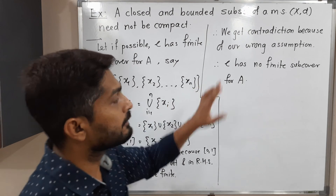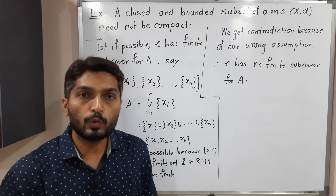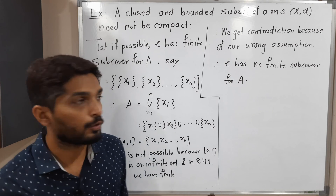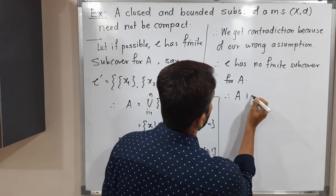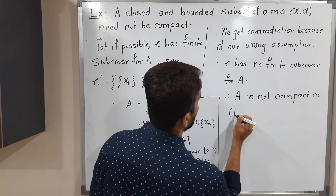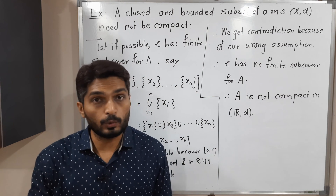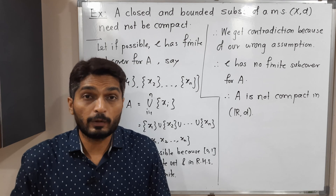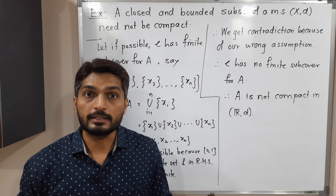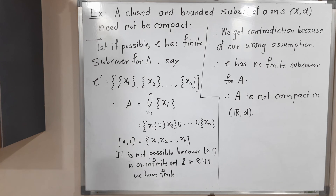Therefore, we conclude: we get a contradiction because of our wrong assumption, and we rectify our statement — script C has no finite subcover. So we got an open cover which has no finite subcover. Therefore A is not compact in metric space (R, D) where D is the discrete metric. Here we found a set which is closed and bounded but not compact. Therefore every closed and bounded set need not be compact. But in R^n with Euclidean distance D, in that case you can say every closed and bounded set is compact.